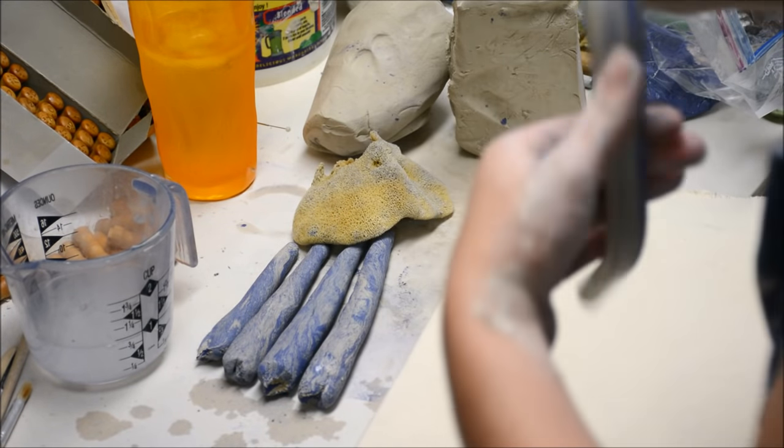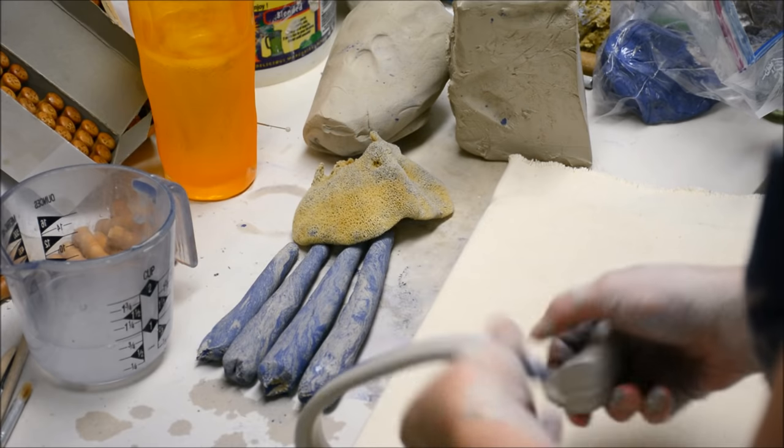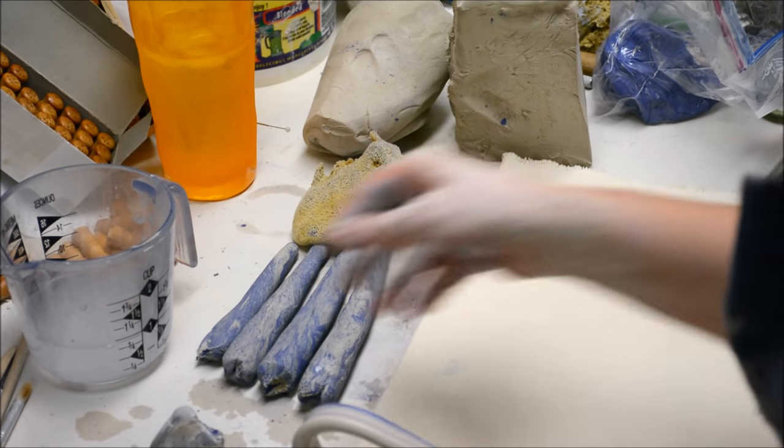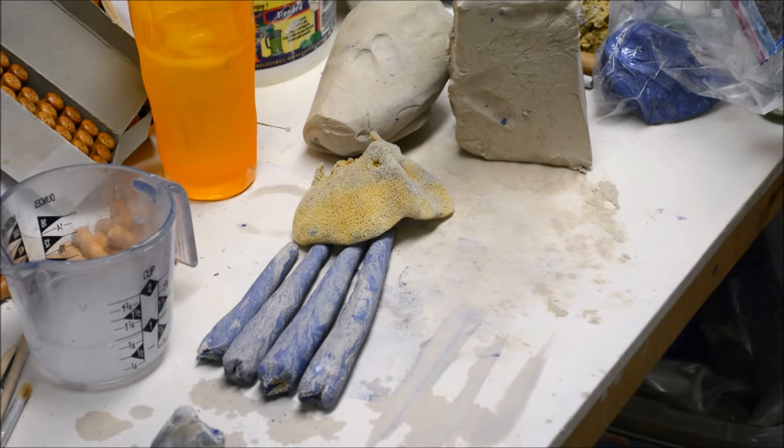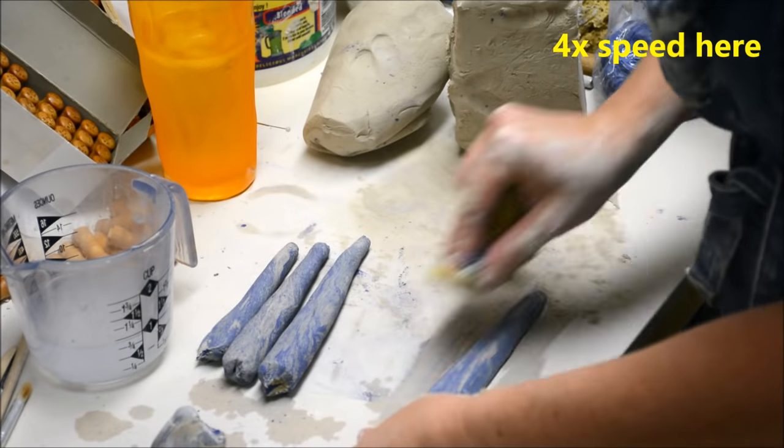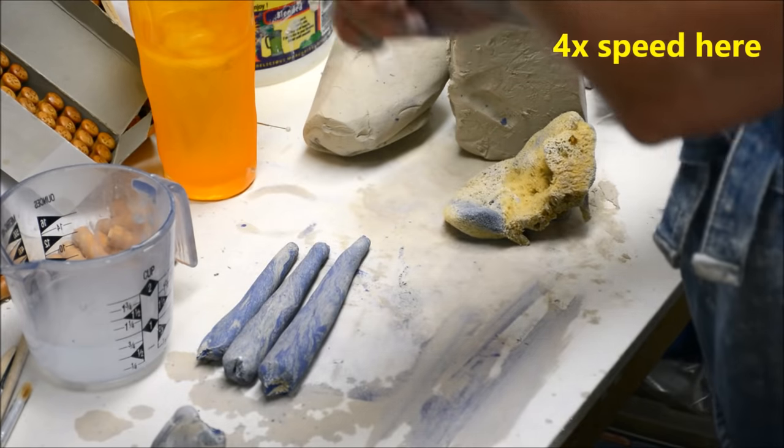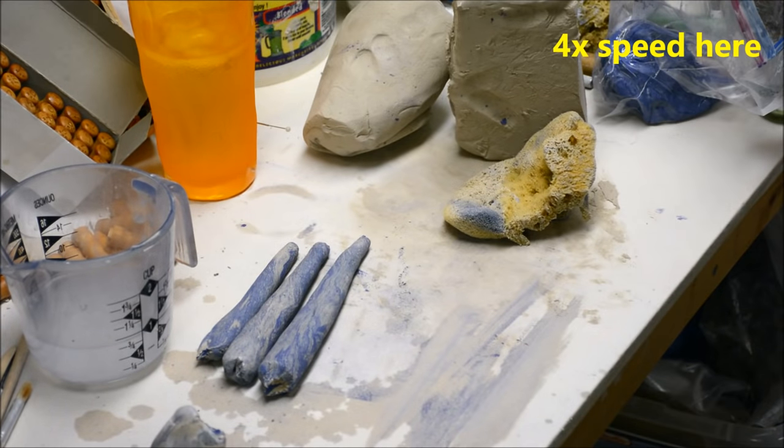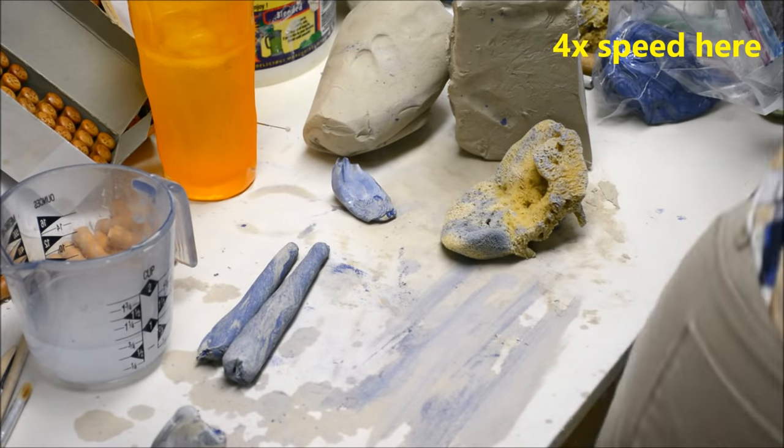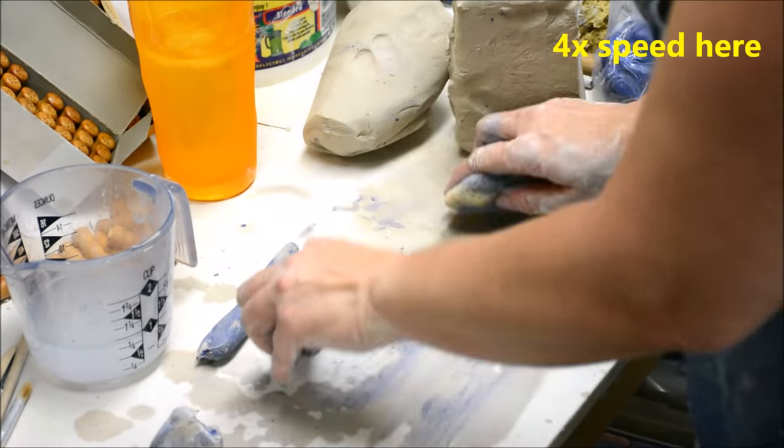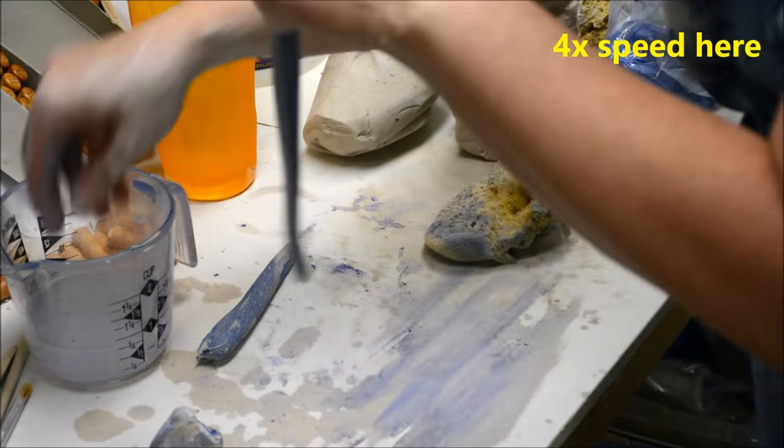I'll put this on a ware board. I position it in the curve that I want. And again, the process is I smack down the coil, I use a sponge to compress it, I use my fingers with water to compress it further and stretch it. I do have another video you can look at that might give you a little bit more insight.